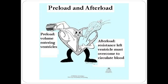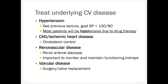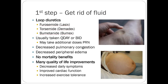Preload is the volume entering the ventricles; afterload is the resistance the left ventricle must overcome to circulate blood. Hypertension gets treated naturally by treating heart failure. The first step is loop diuretics — we want to get rid of fluid. If your patient is fluid overloaded, you can't really do anything else; you've got to normalize them before you can treat the underlying condition.